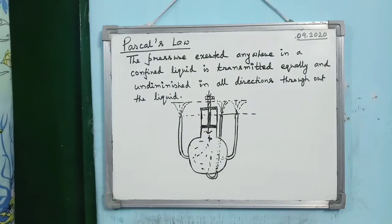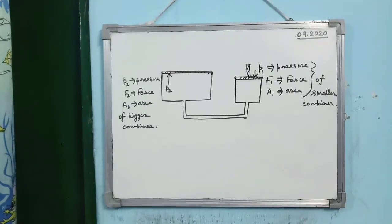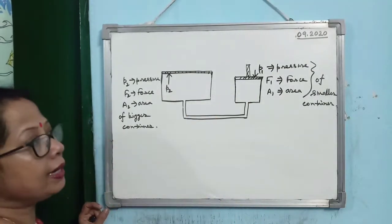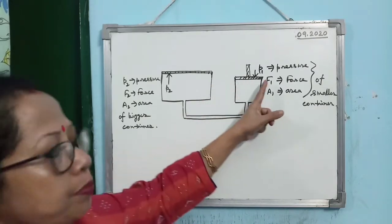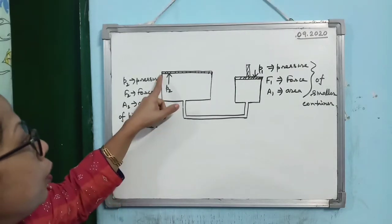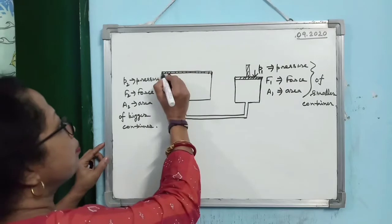From Pascal's Law we get the concept of multiplication of force. Consider two interconnected containers — one small and one big. There is a piston above the smaller container and a movable platform over the bigger container.